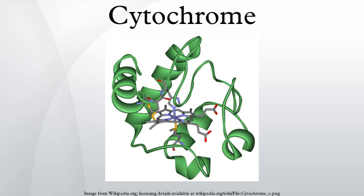The net effect is that protons are transported across the mitochondrial inner membrane. The resulting transmembrane proton gradient is used to generate ATP, which is the universal chemical energy currency of life. ATP is consumed to drive cellular processes that require energy.